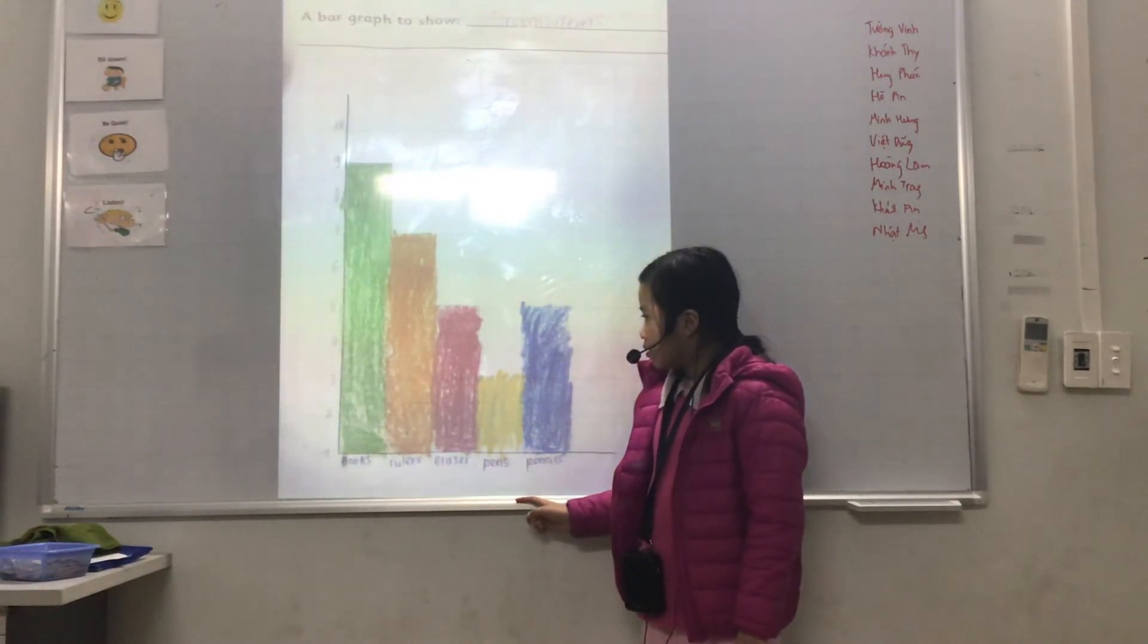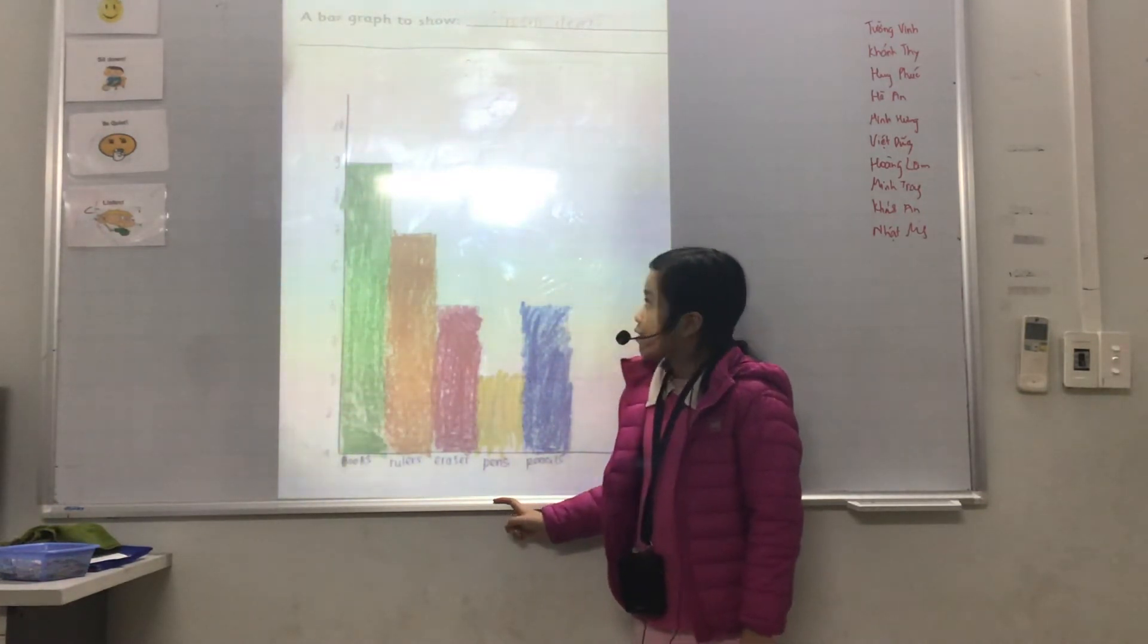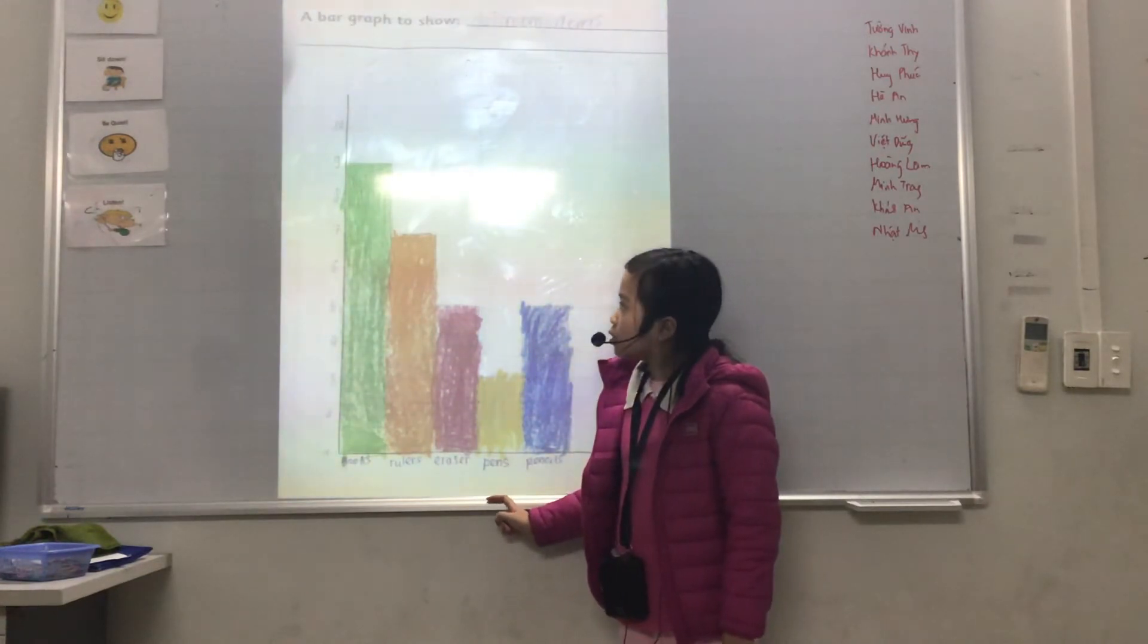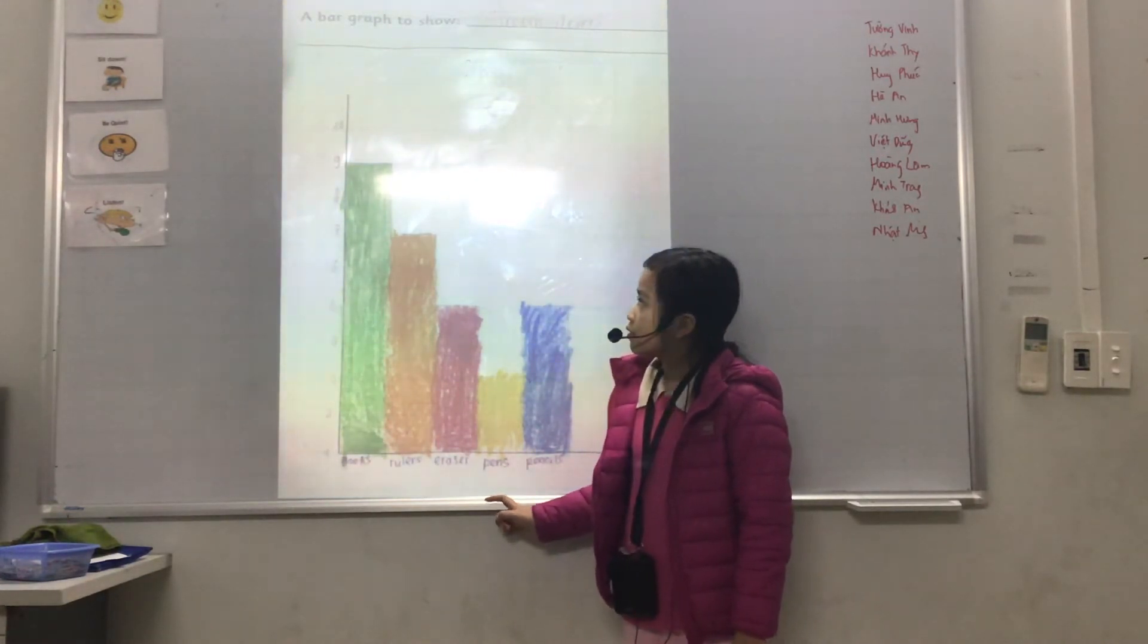The number of pens is the least. It is 3. The number of books is the greatest.